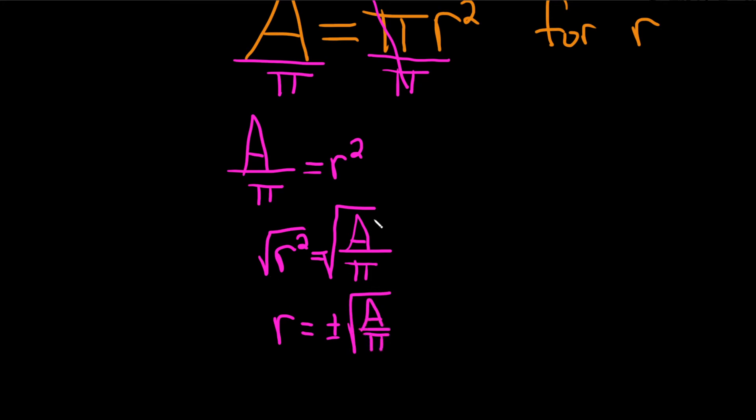You could leave it like this, or you could simplify it more. If you wanted to simplify it more, you would take the square root of the numerator and divide it by the square root of the denominator.